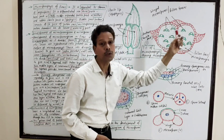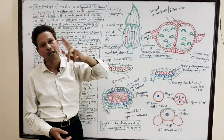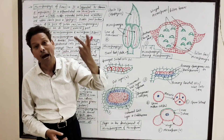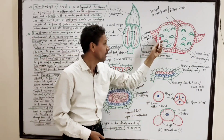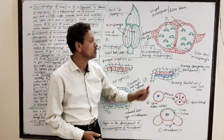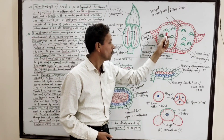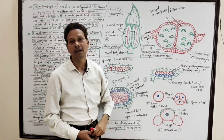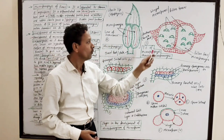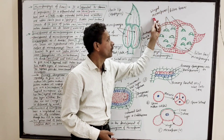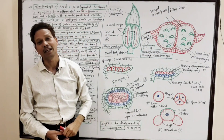In microsporophyll, two pollen chambers, pollen sacs, or microsporangia are present. Each microsporangium possesses pale, yellowish, winged microspores or pollen grains.